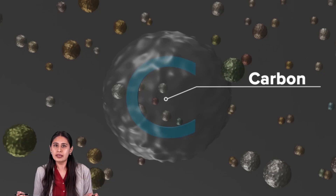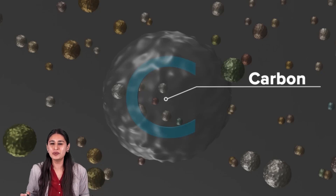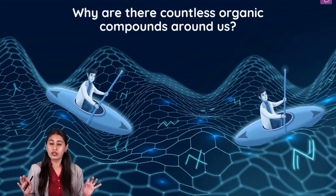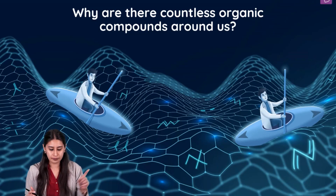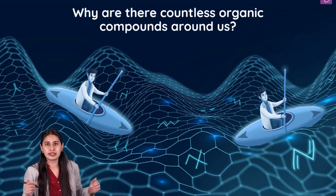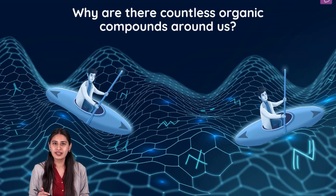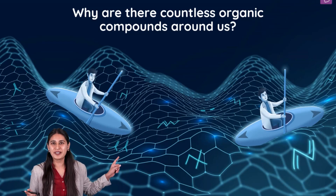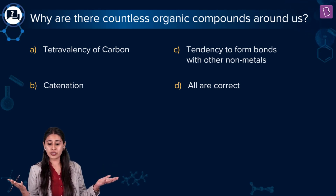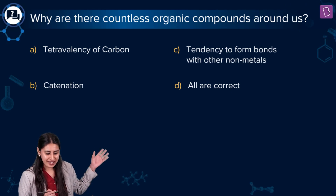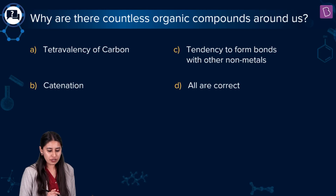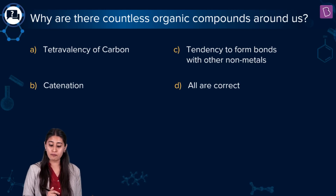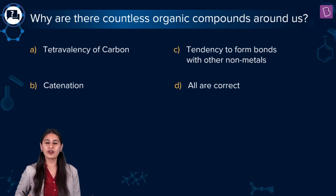Carbon is the soul of organic chemistry. But there's a very basic, foundational question: why only carbon? Why this partiality towards carbon? Why are there countless organic compounds around us? Let me frame this as a question: Why are there countless organic compounds around us? Option A: Tetravalency of carbon. Option B: Catenation. Option C: Tendency to form bonds with other non-metals. Option D: All of these.